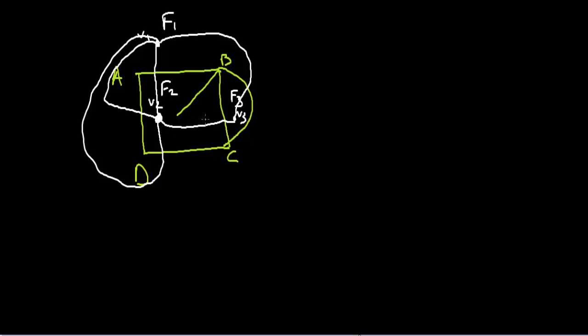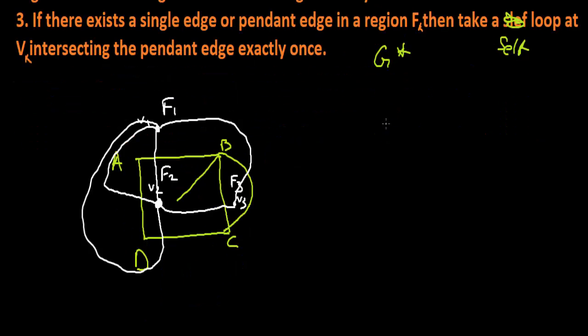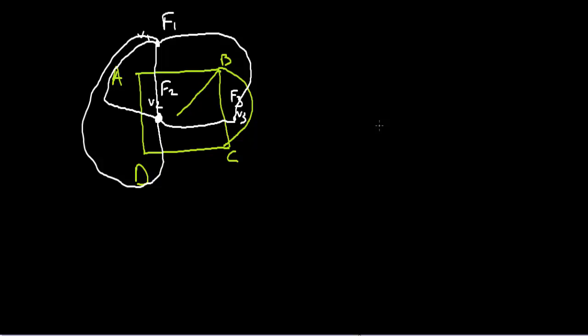Finally, if there exists a single or pendant edge, we take a self-loop in that region. We saw that there is a pendant edge, so we take a self-loop there, intersecting the pendant edge exactly once.